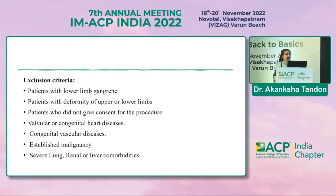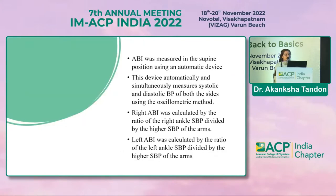Patients with lower limb gangrene, deformity of the upper or lower limbs, those who did not give consent, any patients with valvular or congenital diseases, established malignancy, and severe lung, renal, or liver comorbidities were excluded from my study.